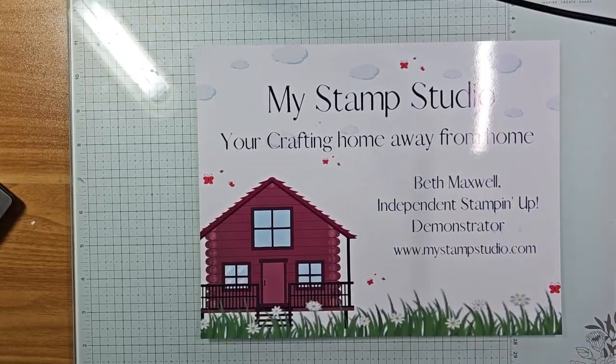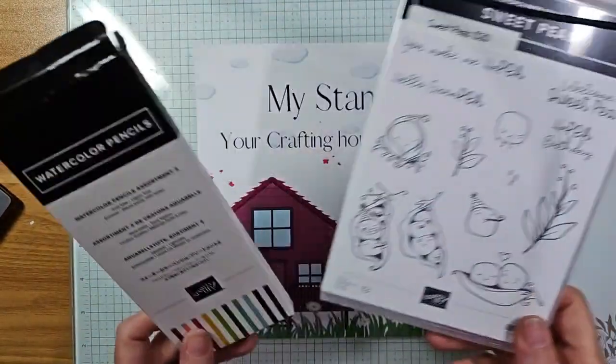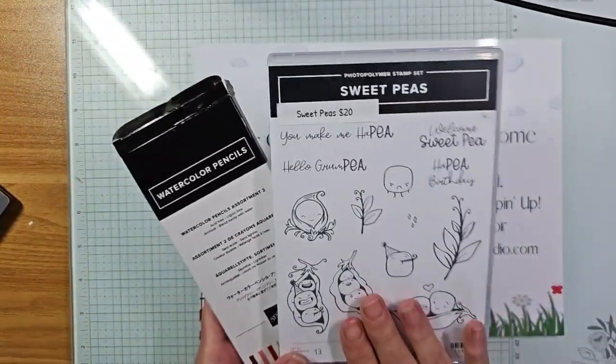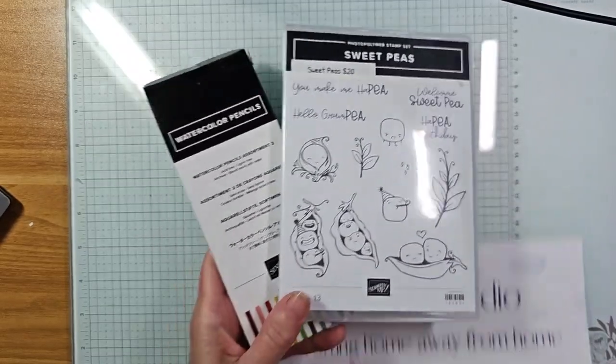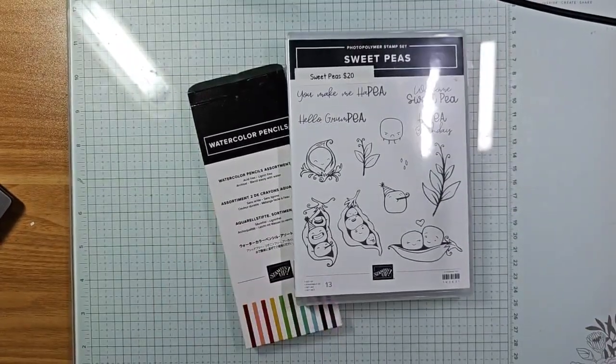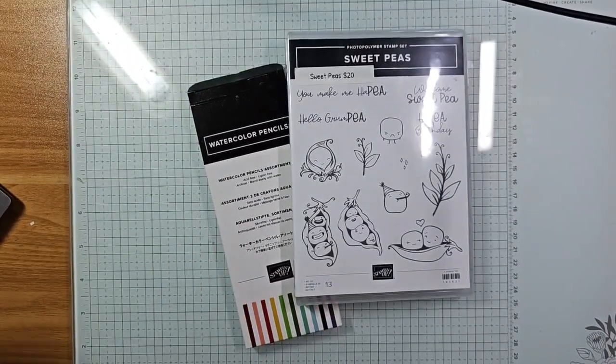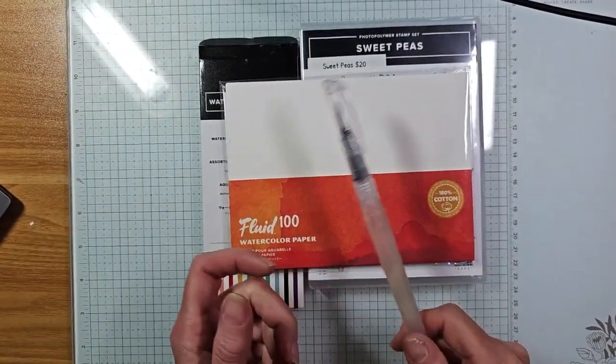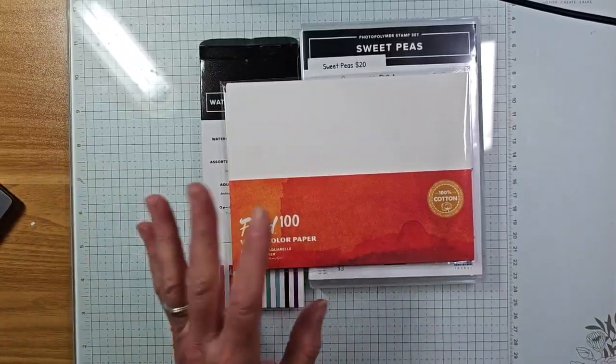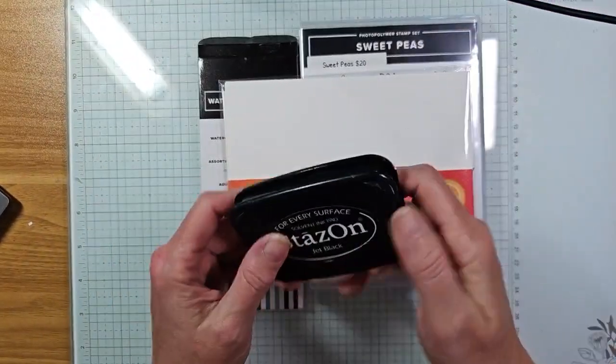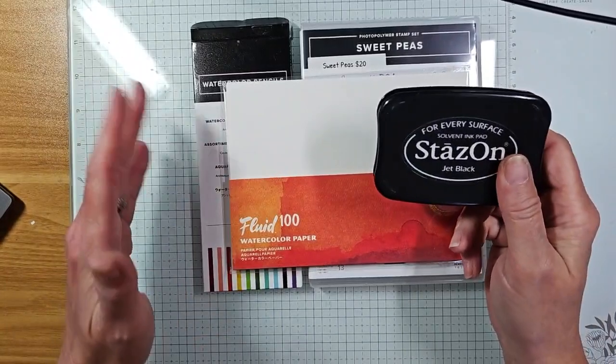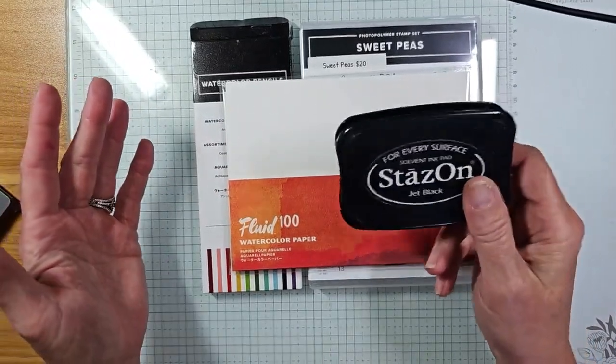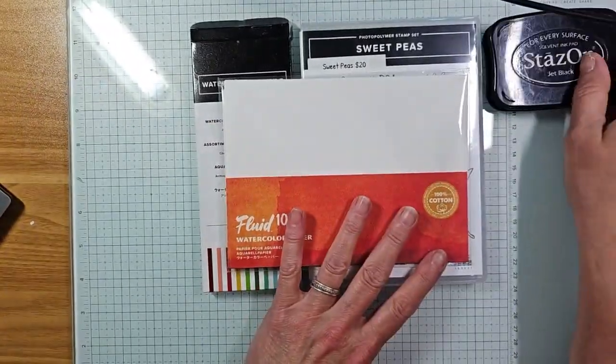We're going to have a quick card today. We're going to be playing with our watercolor pencils, our Sweet Peas stamp set that is in our annual catalog, and we'll also be using our Fluid 100 watercolor paper. Whenever you use aqua painters and watercolor pencils, make sure you use StazOn ink.